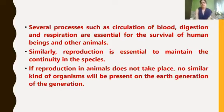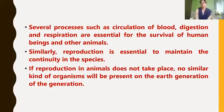Several processes like circulation of blood, respiration, excretion, etc. are essential for the survival of human beings as well as other animals. Similarly, reproduction is also essential to maintain the continuity of species. If reproduction does not take place, no similar kind of organisms will be present on the earth generation after generation. So, in order to maintain the continuity of different species on the earth, reproduction is essential.